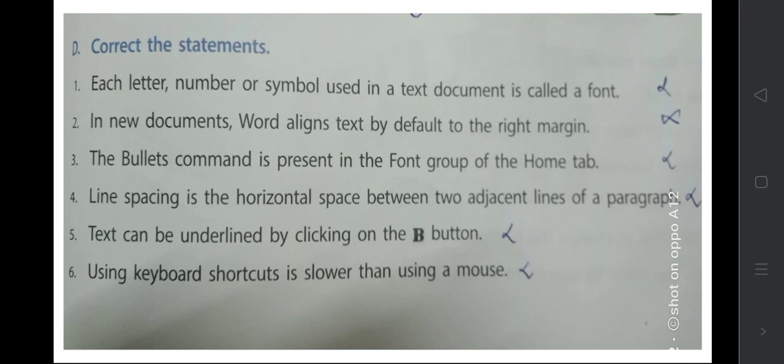'Text can be underlined by clicking on the B button' — that is the Bold button, so this is false. For underline, you select U only, then the text will be underlined. 'Using keyboard shortcut is slower than using a mouse' — this is false; it is faster. So these statements are false.